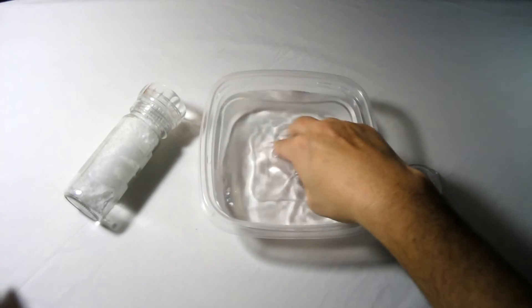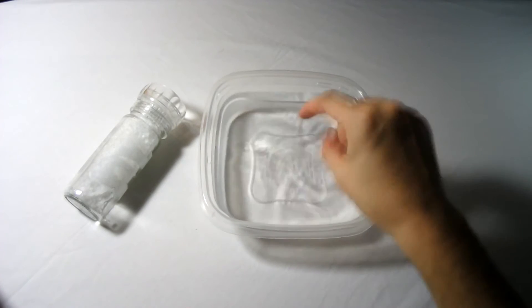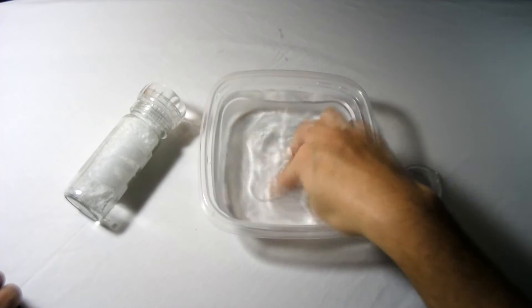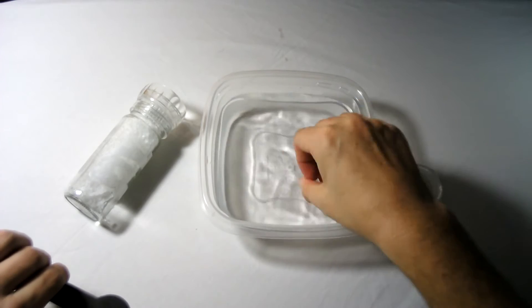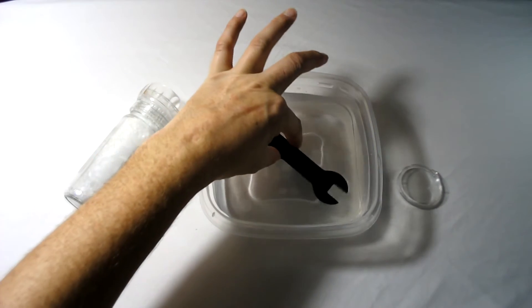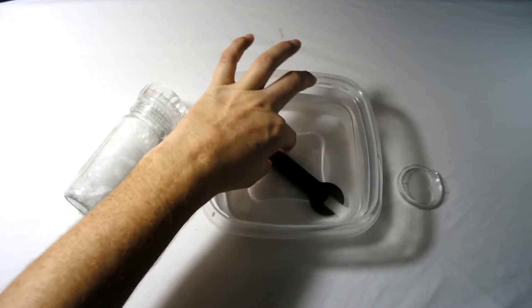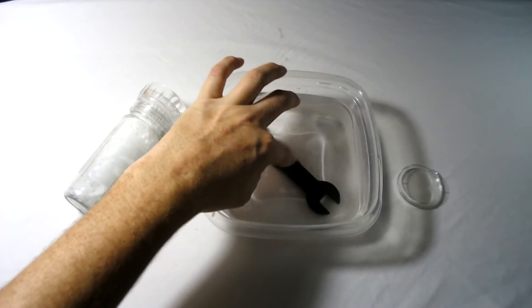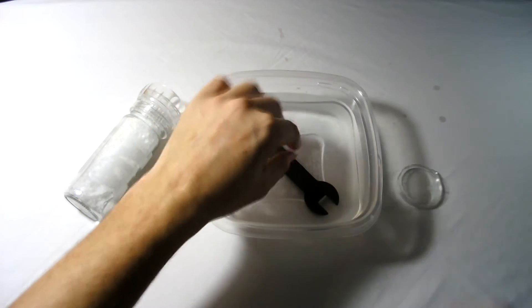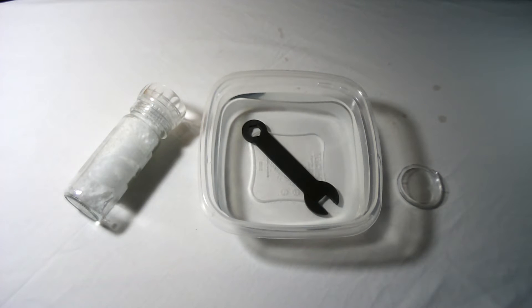Then once you've done that, take the magnetic iron object that you have and drop it into the water, making sure that it doesn't float to the top. Once that's done, leave it for 24 hours, 48 hours, or however long you wish.